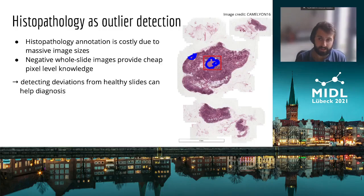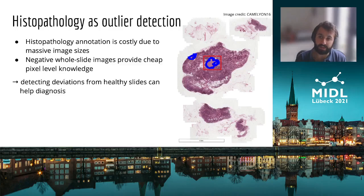On the other hand, we can use slides that are known to be fully healthy as negative examples to provide cheap pixel-wise labels. The idea of outlier detection is that we could learn what this healthy tissue looks like and detect deviations from it as outliers to help diagnosing unhealthy regions.